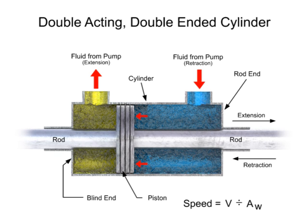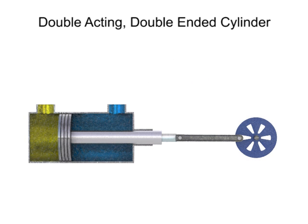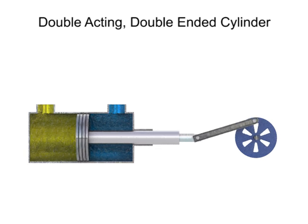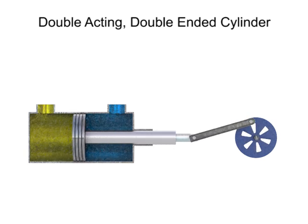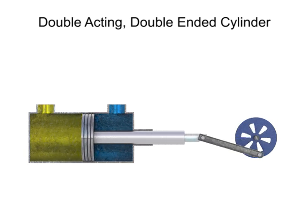Due to their simple design, cylinders are used more often than any other type of actuator for industrial applications. Although their motion is linear, it can be converted to rotary motion by levers, racks and pinions, or other means, making them one of the most versatile types of actuator.